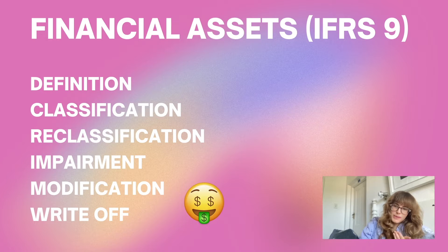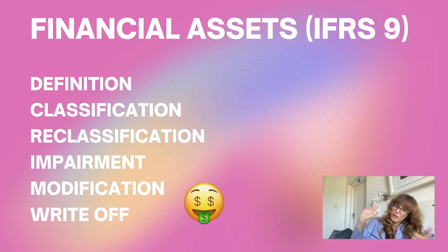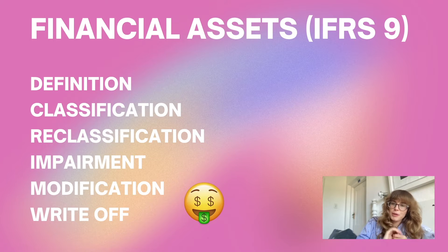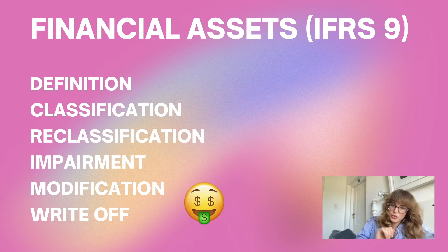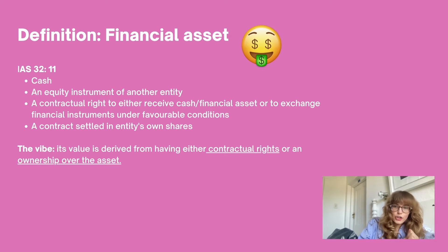When doing financial assets I'm going to go through the formula of: the definition, the classification, the reclassification, impairment, modification, and write-offs. If you flag your IFRS 9 as such you'll be fine, because that covers everything you'd ever need to know for financial assets. So first things first — what is a financial asset?